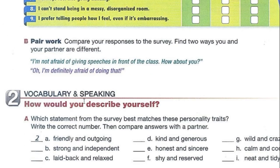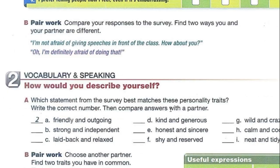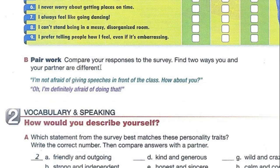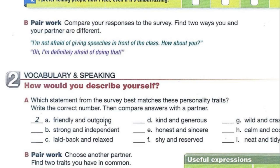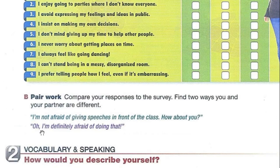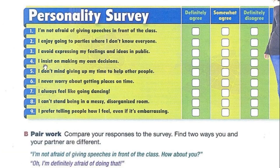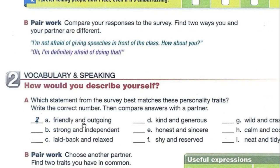Let's move on into vocabulary and speaking. How would you describe yourself? We have here personality traits. For example, friendly and outgoing — you need to connect these personalities with the statements. Friendly and outgoing is related to statement number two: I enjoy going to parties where I don't know everyone. So if you enjoy going to parties where you don't know everyone, that means you are friendly and outgoing — you can make friends easily.